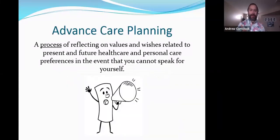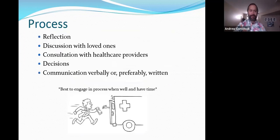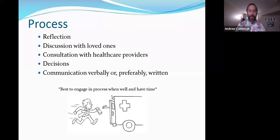Advanced care planning is a process of reflecting on your values and wishes related to your healthcare and personal care, if you can't speak for yourself. The process involves reflection — thinking about yourself, your quality of life, and your wishes. Then having discussions with your loved ones, and consultation with your healthcare providers. When I do this with people, I always recommend they speak to a doctor or nurse practitioner who knows their specific medical situation well.